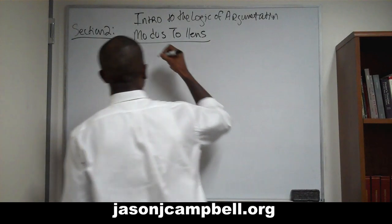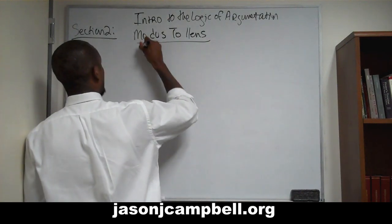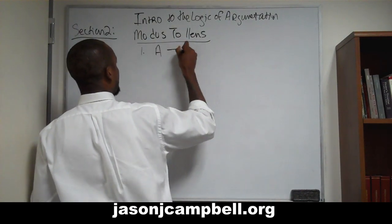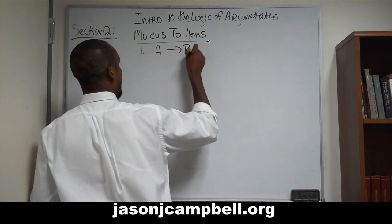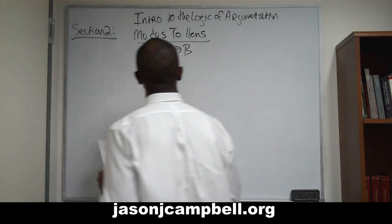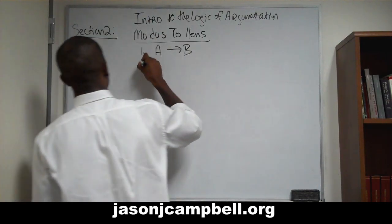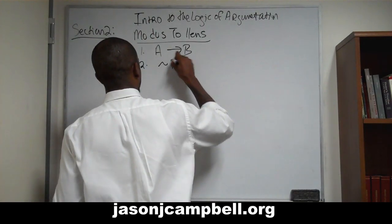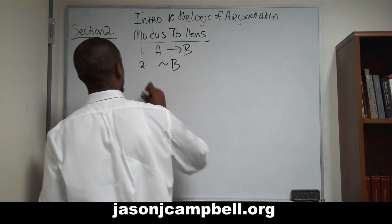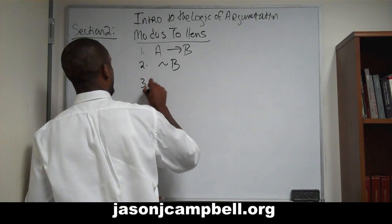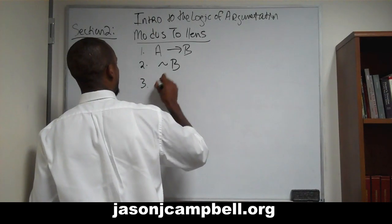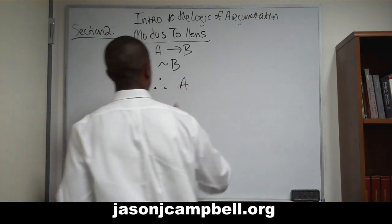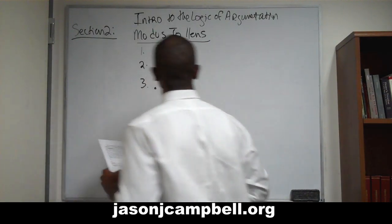Modus tollens says: line 1, if A happens, then B happens. Line 2 says B does not happen. And then line 3 says therefore A does not happen.